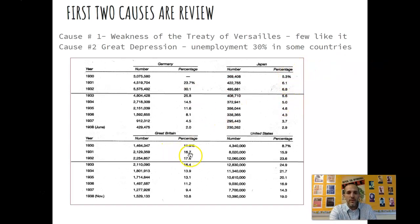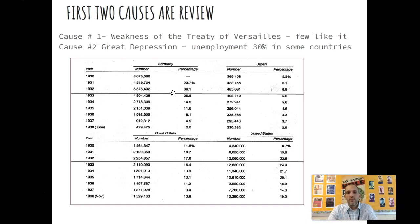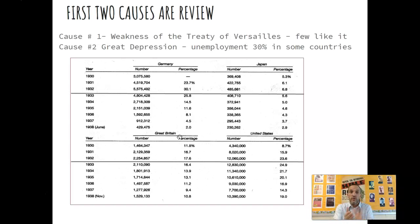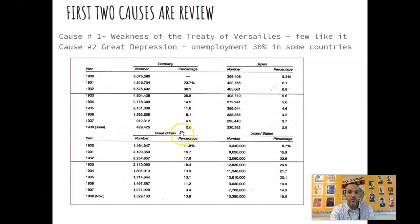Japan at this time had 6.8% unemployment — not too bad for them. Great Britain had 17.6%, and the United States had 23.6%. I want to point out the German example in 1932 because that is when the Nazi party comes to power. In 1933, Hitler becomes a kind of temporary dictator, and you can see how unemployment drops through 1938. When economic times are rough, people are willing to limit their freedoms and turn toward a more totalitarian leader for economic security.